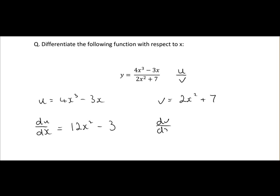Differentiate v, 2x squared, differentiate that, we get 4x. Plus 7, any constant differentiates to 0.